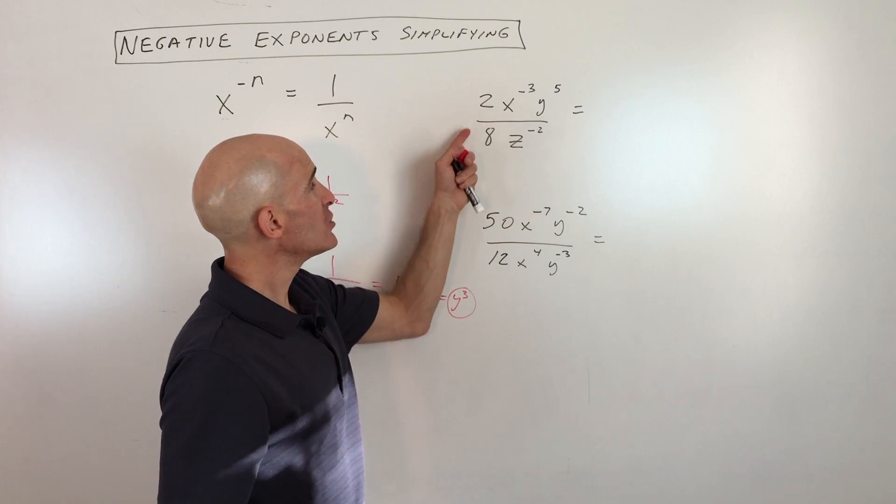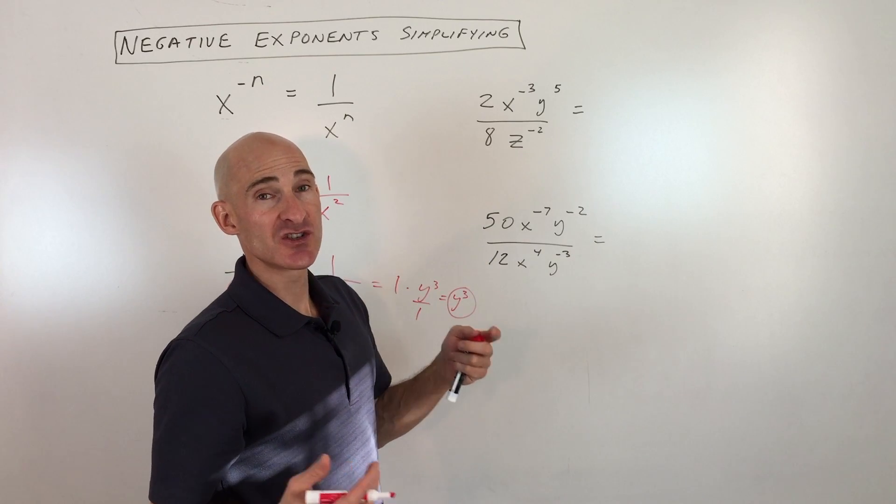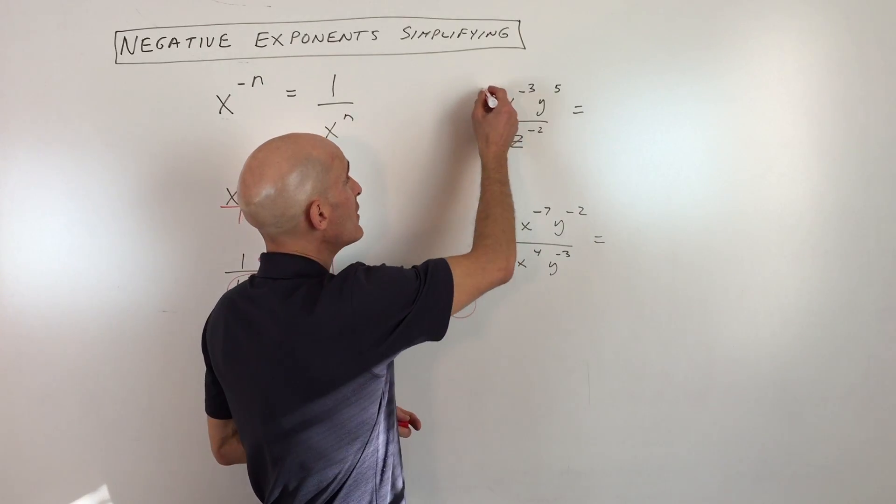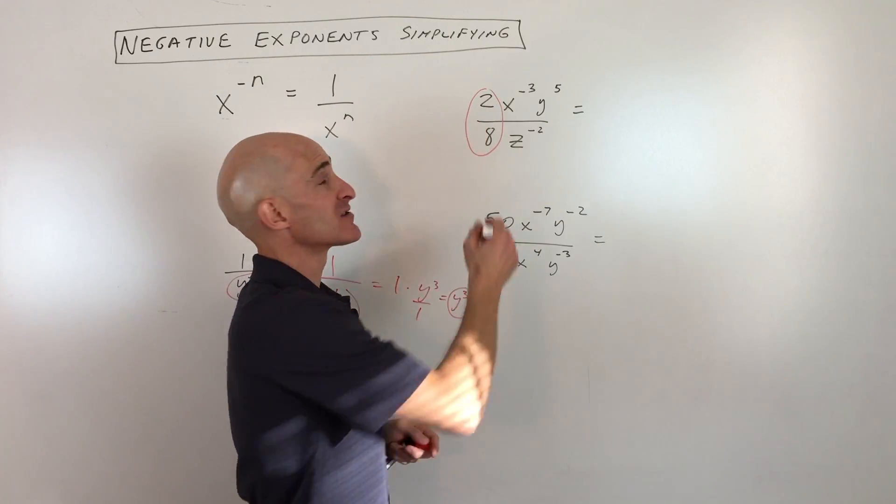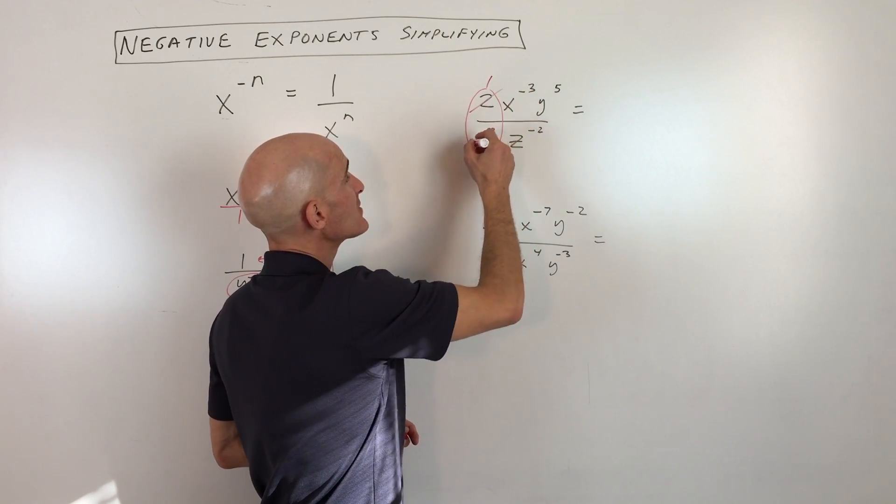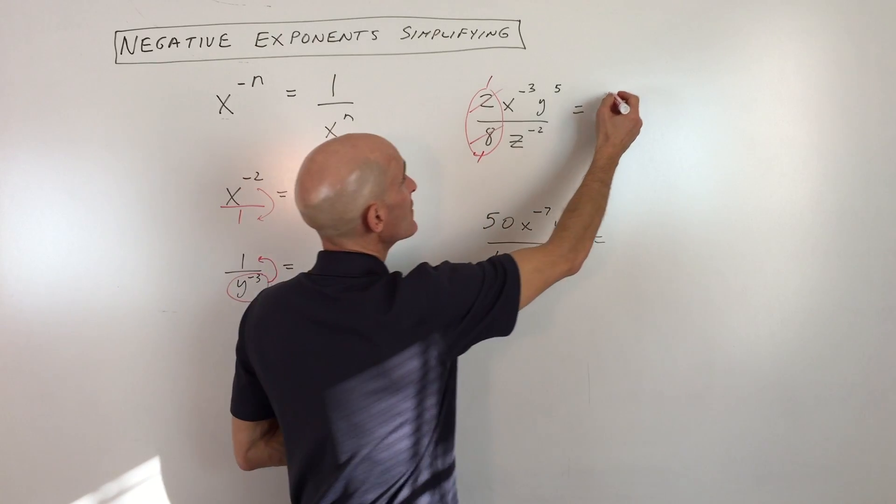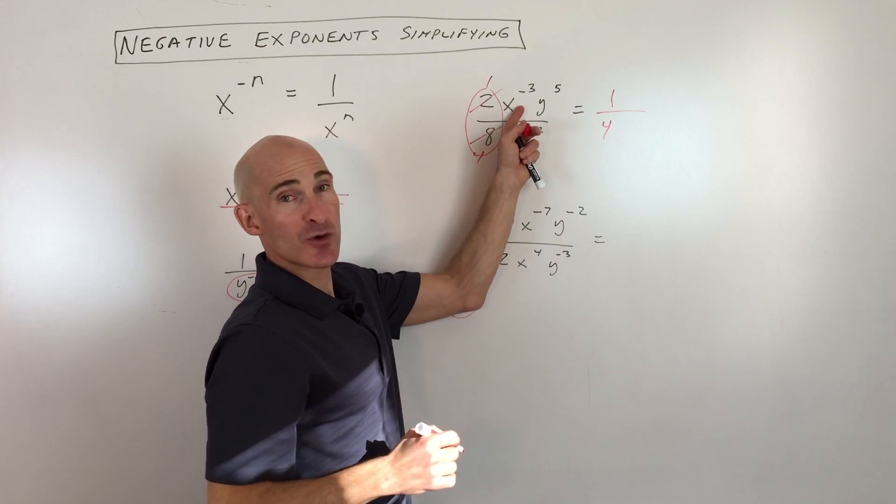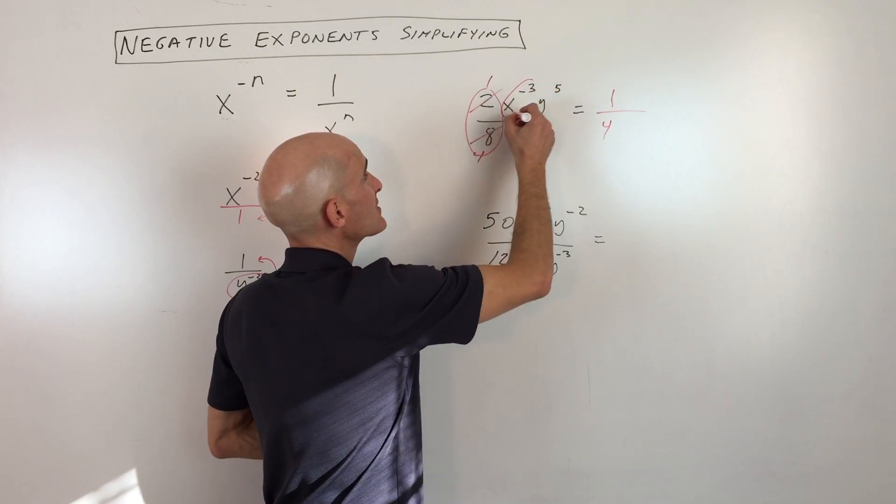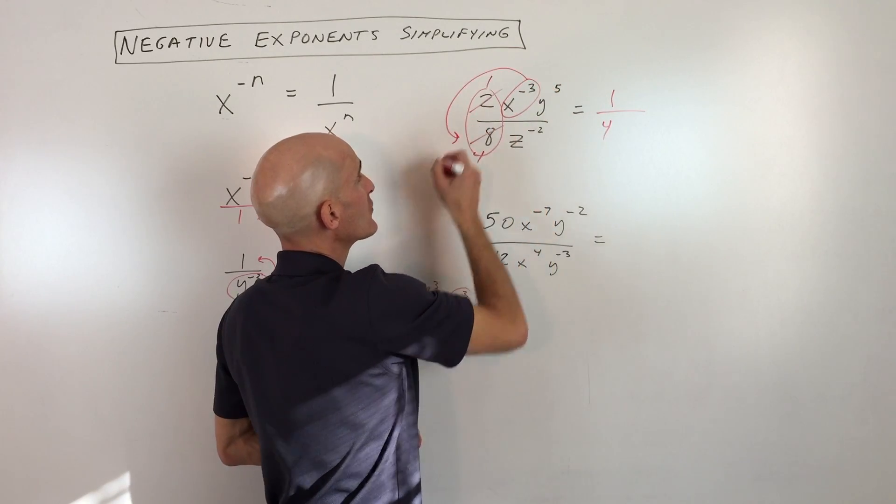So what you can do is just like when you simplify fractions ordinarily, you can look at the numbers just like a fraction in integers, and you can just simplify this. Like 2 goes into 2 once, 2 goes into 8 four times, so we've just reduced this to a 1/4th. And then just like we were talking about earlier...